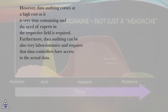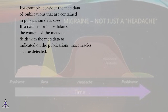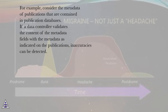Furthermore, data auditing can be also very labor-intensive and requires that data controllers have access to the actual data. For example, consider the metadata of publications that are contained in publication databases. If a data controller validates the content of the metadata fields with the metadata as indicated on the publications, inaccuracies can be detected.